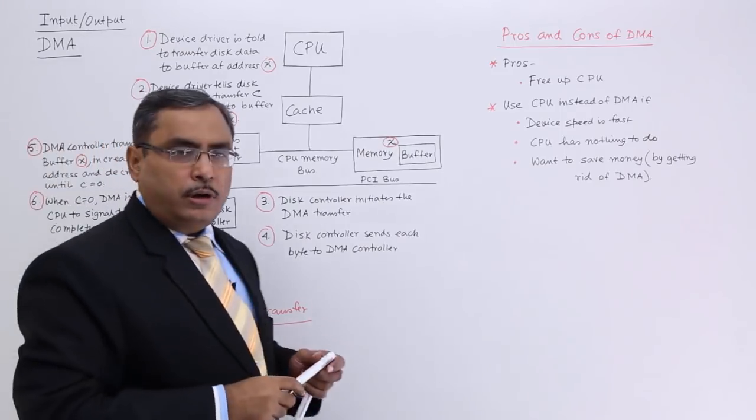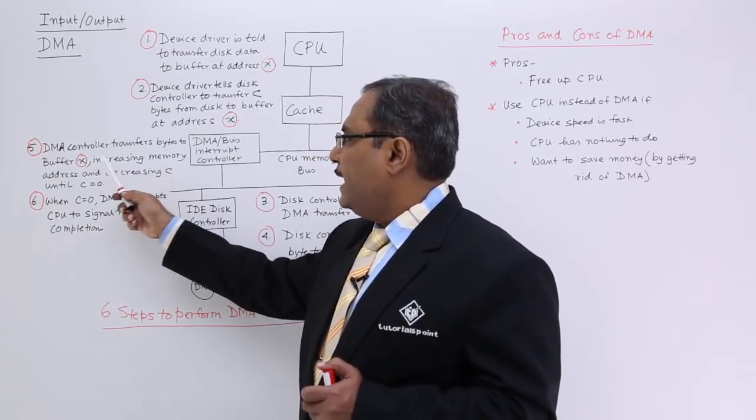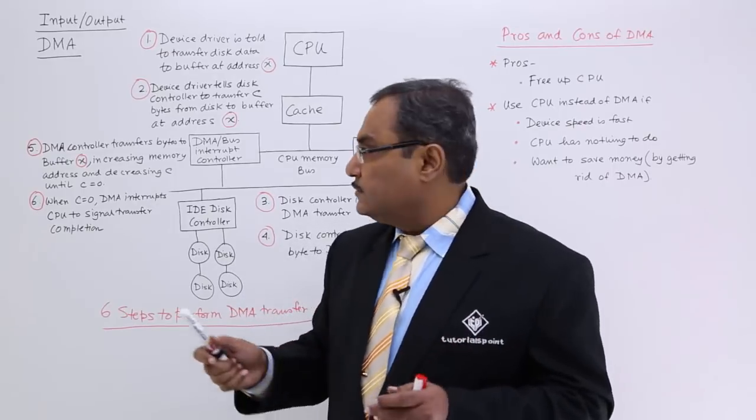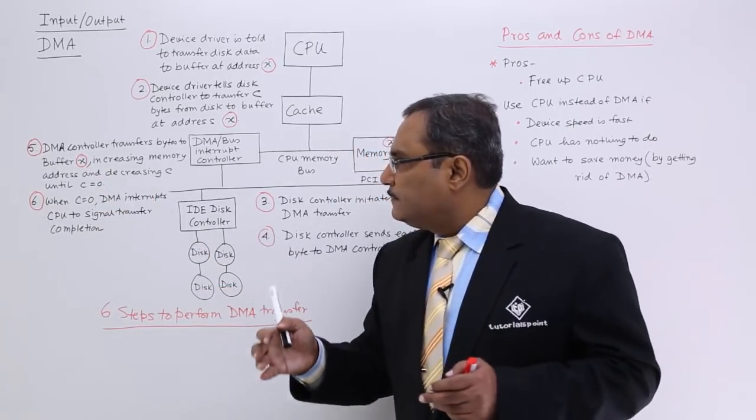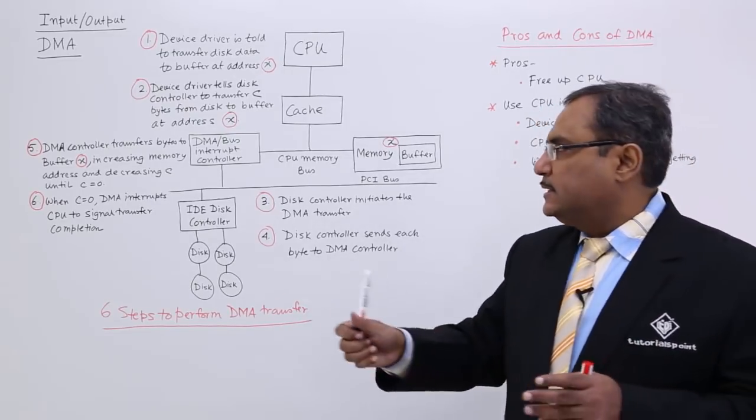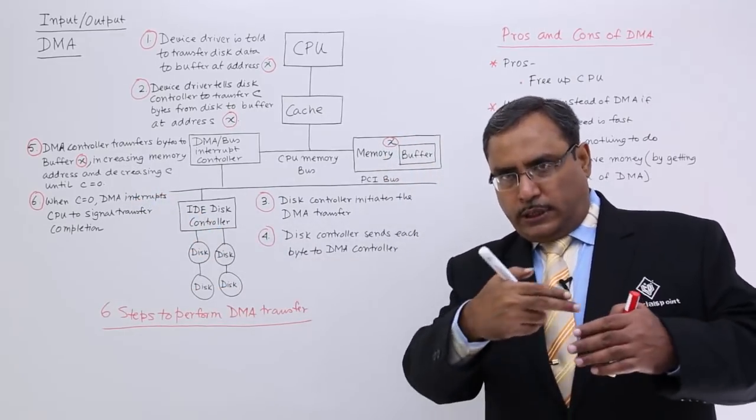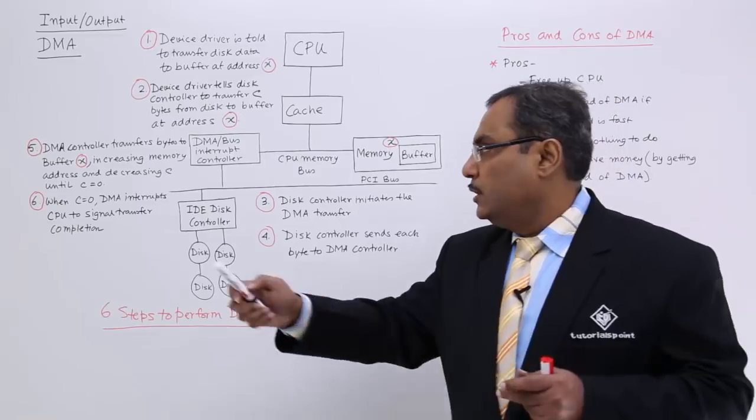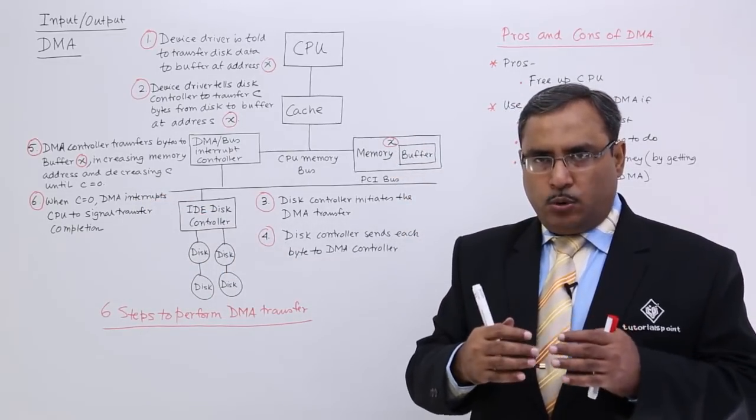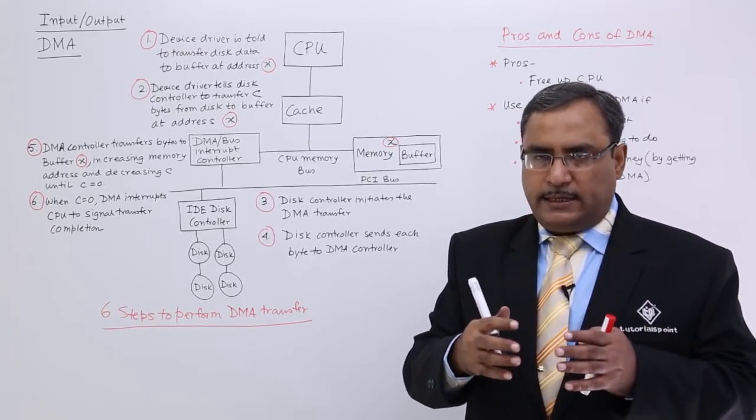DMA controller transfers bytes to the buffer x into the memory address and decreasing the count that is the number of bytes to be transferred. DMA controller transfers the data to the respective buffer address x after getting it from the disk controller, increasing the memory address. It will go for the next memory location where the next byte has to be kept and also decreasing the counter because it must have a counter which is known as the word count and this word count will indicate how many bytes it has transferred already.